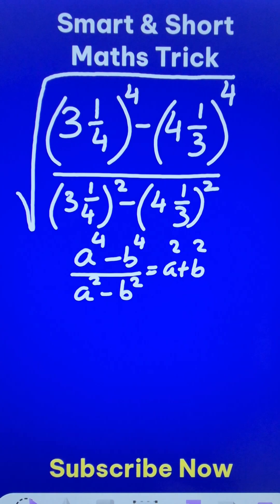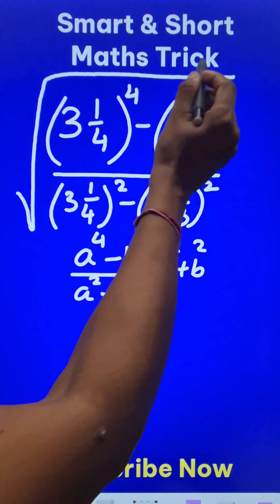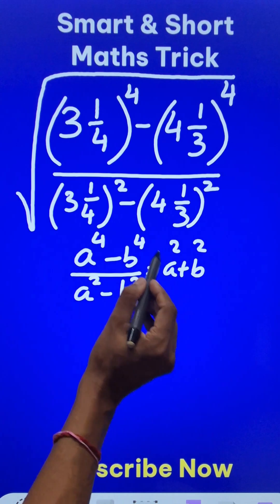So, all we need to do is to find a square plus b square and then take the square root. Now, what is a square?